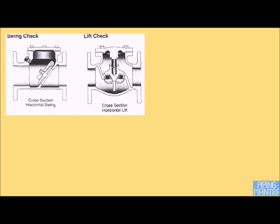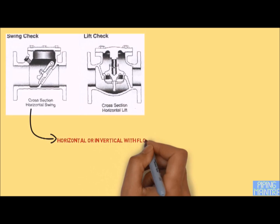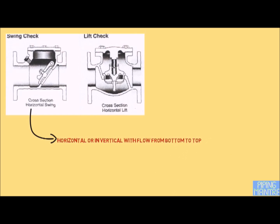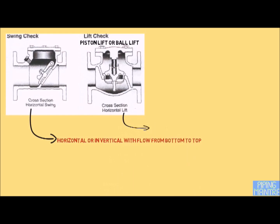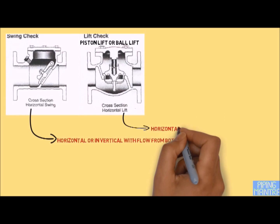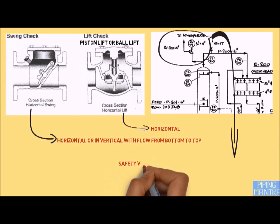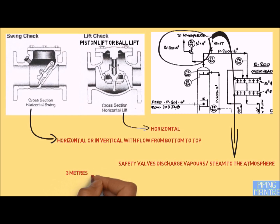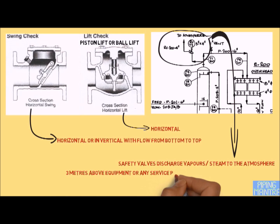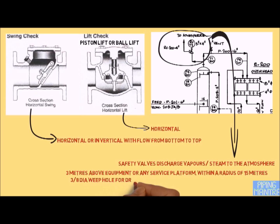For non-return valves (NRVs), the first type is the swing check valve, which can be placed vertically if the flow is from bottom to top. The second type is the lift check valve — piston or ball type — which must be placed horizontally and should not be installed vertically. For safety valves, when discharging vapor or steam to atmosphere, the outlet pipe should terminate at 3 meters above the equipment or any service platform where personnel movement is present, and within a radius of 15 meters of the valve. A 3/8 inch diameter weep hole is required for drainage at the low point of the line.